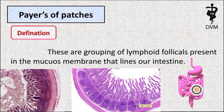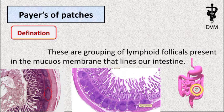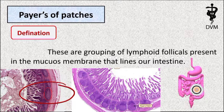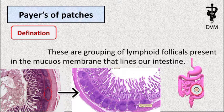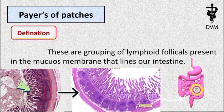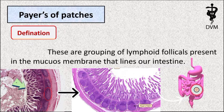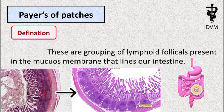Definition: Peyer's Patches are groupings of lymphoid follicles present in the mucous membrane of the small intestine. This mucous membrane lines our intestinal surface.